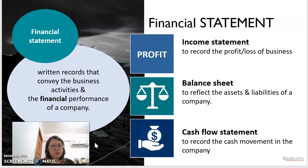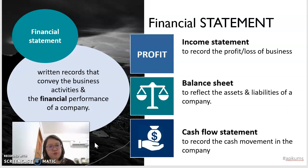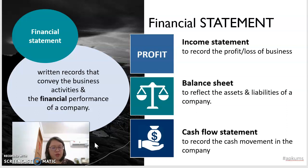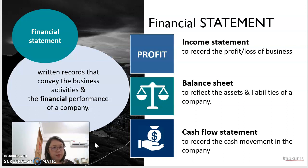So we want to know: is the company making profit or loss? Does the company have good cash flow in that period of time? And whether the company has assets or liabilities to do the business? In the financial statements, we actually prepare three statements: the income statement, which records profit or loss; the balance sheet, which reflects assets or liabilities; and the cash flow statement, which records the movement of cash in the company.